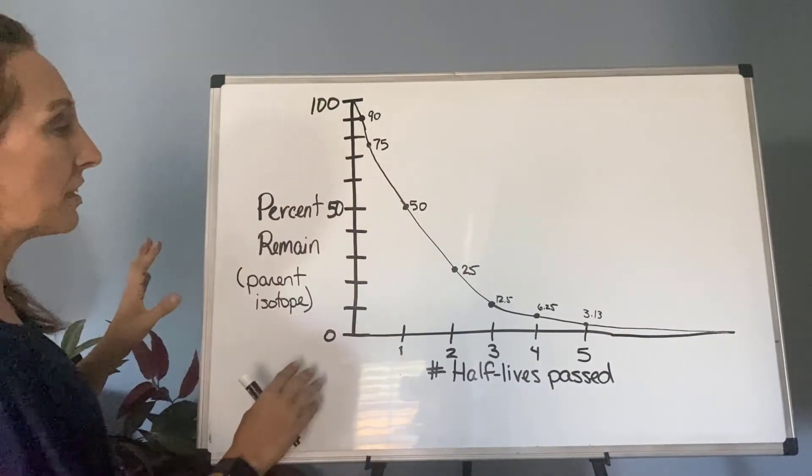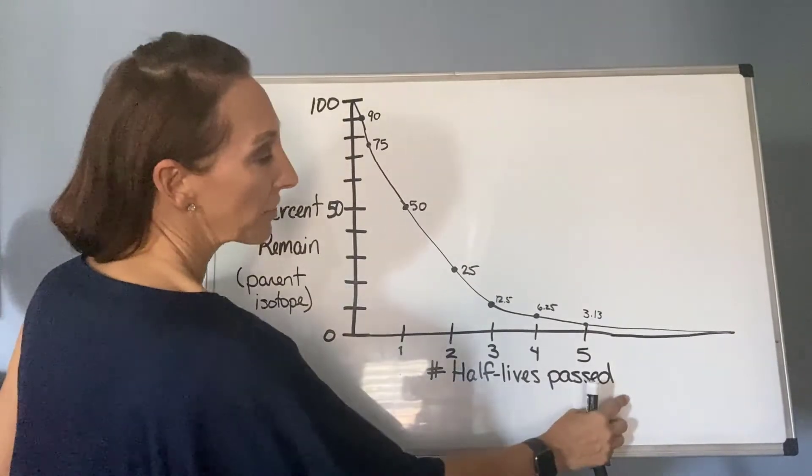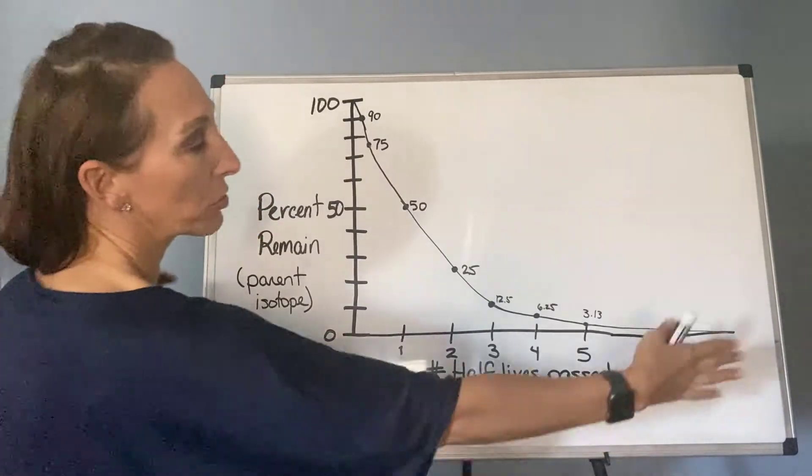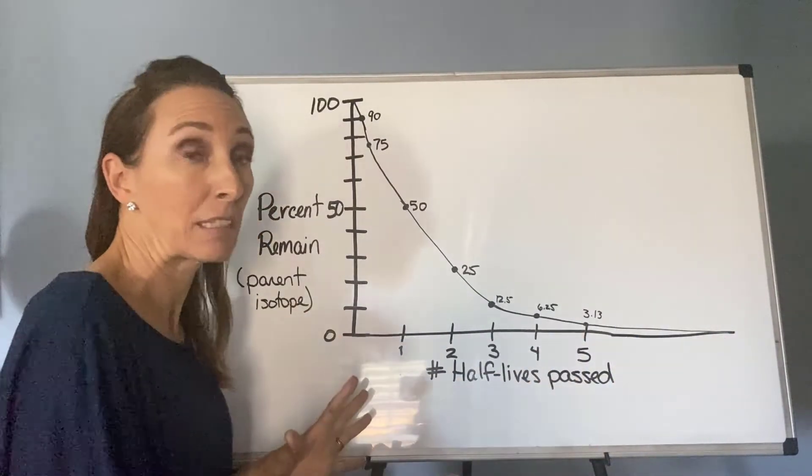What you'll see is on the x-axis, it's showing the number of half-lives that have passed. So one through - it'll go further than that. I'm just using a snippet.